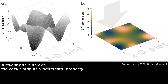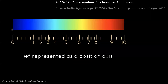To understand why distorting the color map matters, it helps to know what a color bar is. A color bar turns a three-dimensional plot into a two-dimensional one, very convenient for papers. The color bar is a representation of the position axis — the third dimension — and the color map is its fundamental property, equivalent to the spacing between ticks on a position axis.